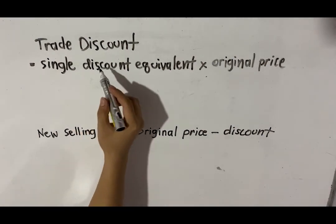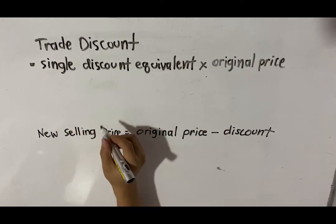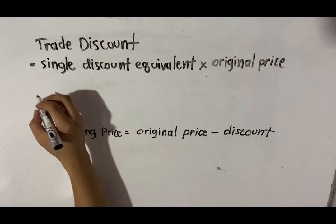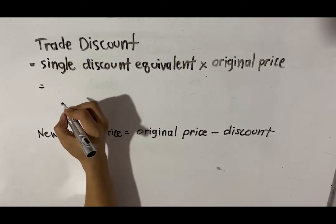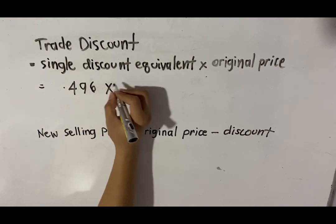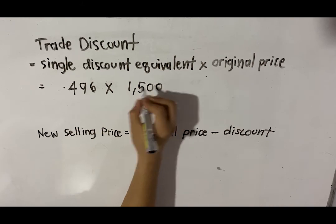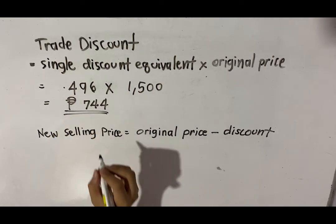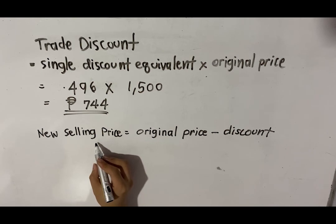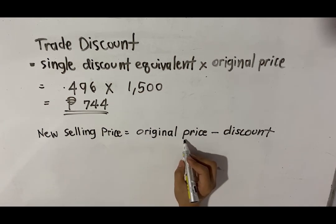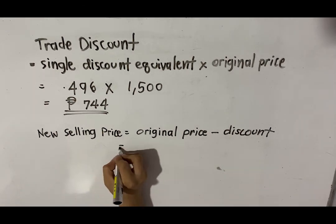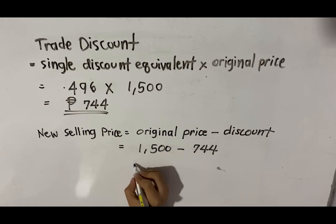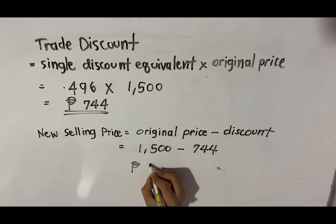How much is the trade discount? To get the trade discount, we multiply the single discount equivalent by the original price: 0.496 multiplied by 1,500. The trade discount for this transaction is 744 pesos. Now, how much is the new selling price? We compute it by taking the difference of the original price and the discount: 1,500 minus 744. The new selling price is 756 pesos.